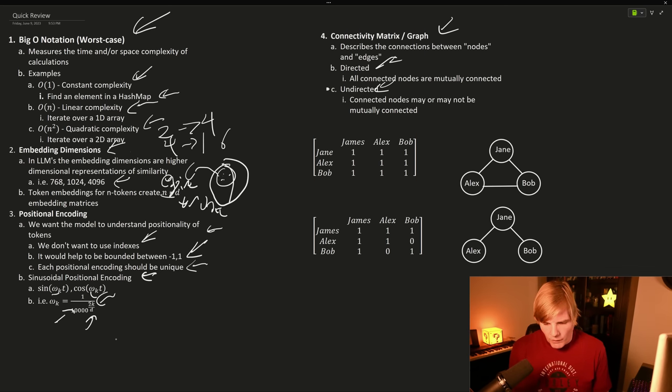So if we have Jane and Alex and Bob, and they're all friends, then they would all be connected by edges, and their values between them would all be ones. But what if Jane only knew Alex and Jane only knew Bob?